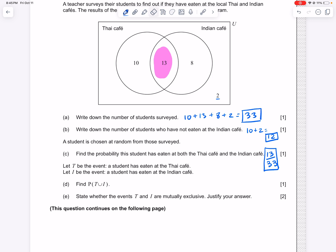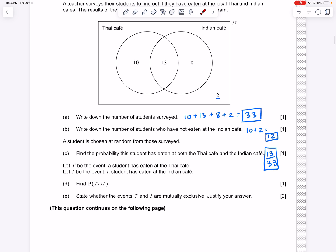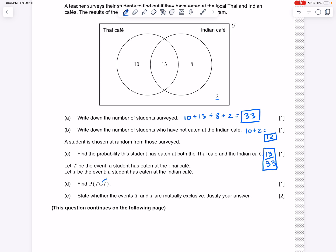So now the question says to us that T is going to represent a student, an event that a student has eaten at the Thai Café. And I is going to represent a student that has eaten at the Indian Café. And so now this looks a lot more complicated, but it is actually the same thing if you know how to translate the words. And so this means union. And it also means or.